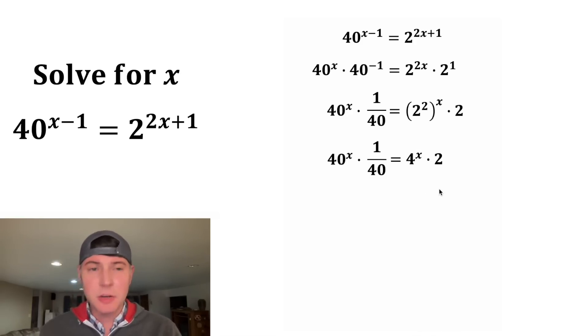Right now, we have an x on both sides of the equation. We want to move all the x's to one side. The best way to do that would be to divide both sides by 4 to the x. On the left-hand side, this gets moved under here and we end up with 40 to the x over 4 to the x. And then on the right-hand side, this can be brought down here. And this 4 to the x and this 4 to the x can cancel each other out. So we're left with 2.